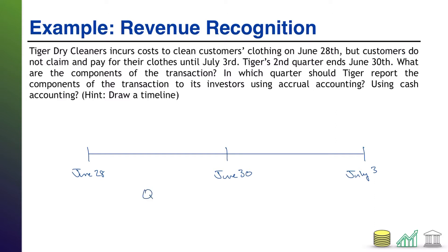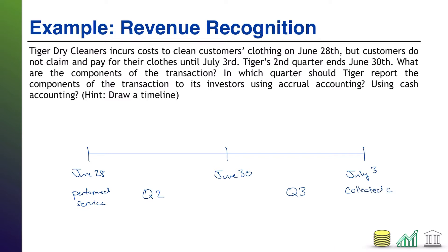The period to the left of June 30th is Q2, and the period to the right is Q3. Now, focusing on the economic activity: on June 28th the company cleaned customers' clothes — in other words, performed the service. On July 3rd the customers collected their clothes and paid — collected cash for services. So there's our economic activity, our key dates, and our timeline.